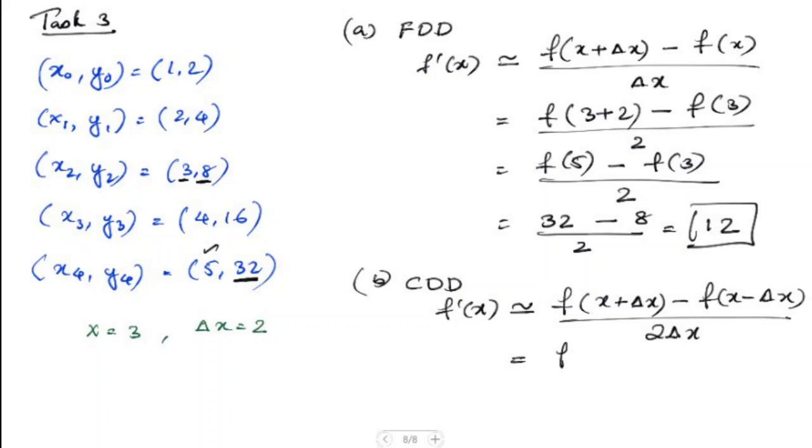Here we have f(x) is 3 and Δx is 2. So we have 3 plus 2 is 5 minus f(3 minus 2 is 1) divided by 2 times Δx is 2 here.